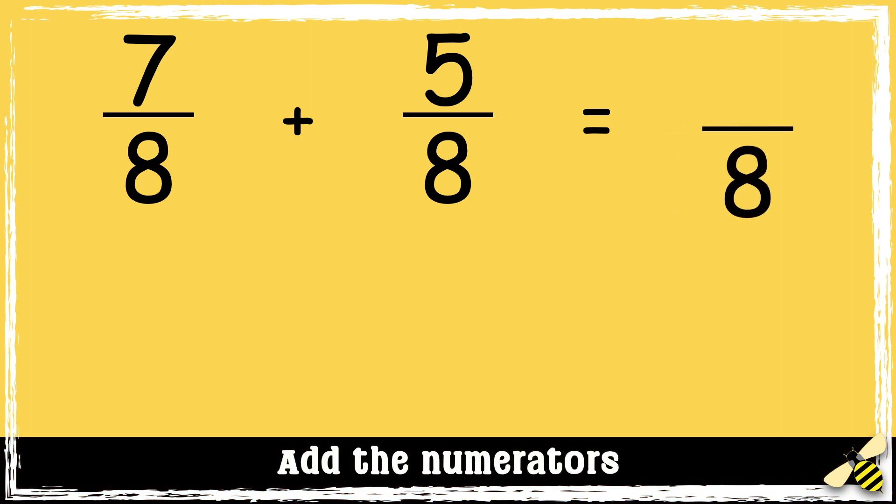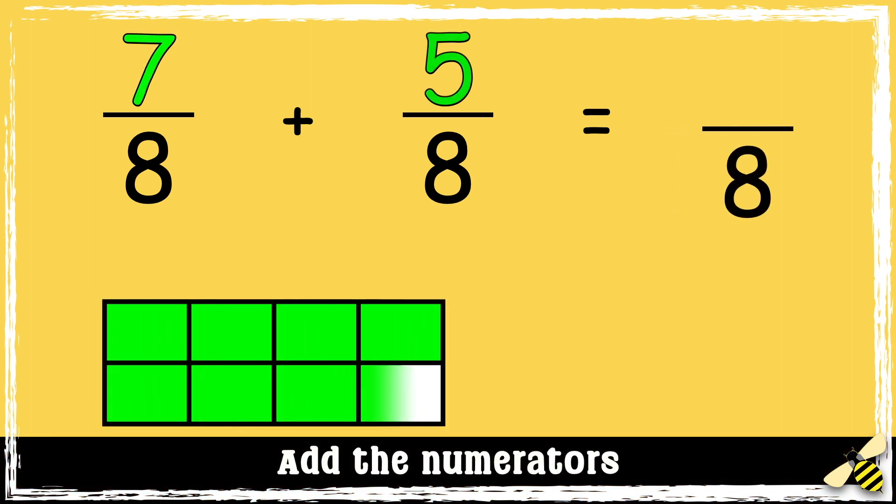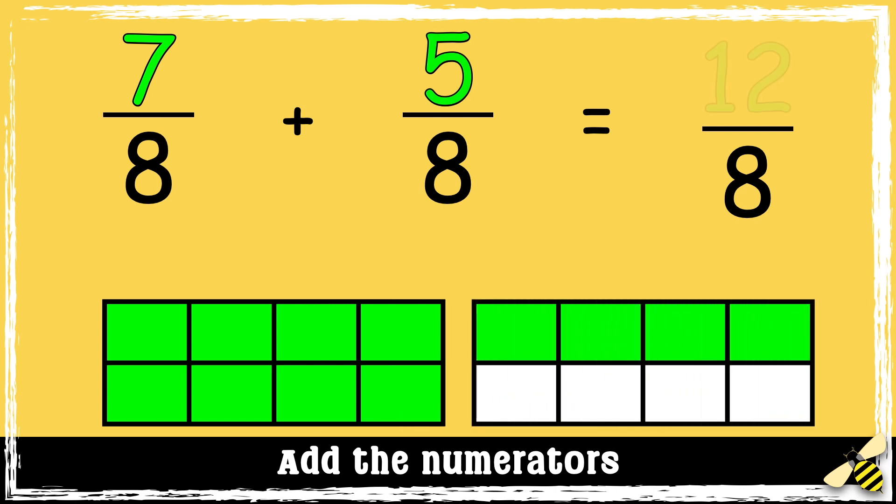Let's have a look at another example. 7 eighths add 5 eighths. So we need to add the numerators. 7 add 5 equals 12.